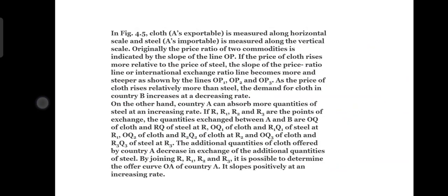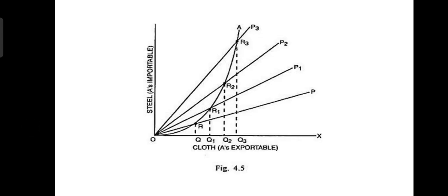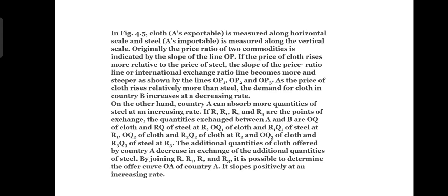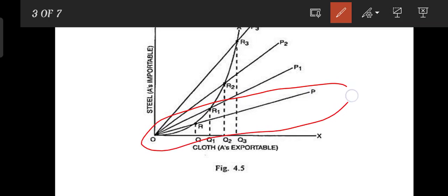Moving on further: in the figure, cloth is the exportable commodity of country A, measured on the horizontal X-axis, and steel is the importable commodity measured on the vertical Y-axis. Originally, we consider different price ratios.